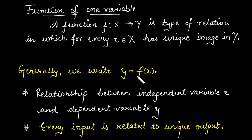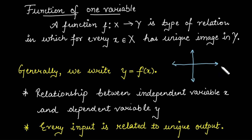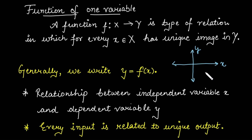In that case, we say that x defines the function. Whenever we are dealing with a one-variable function, we have x as input and the output is stored on a y-axis. Basically, we are dealing with 2D.